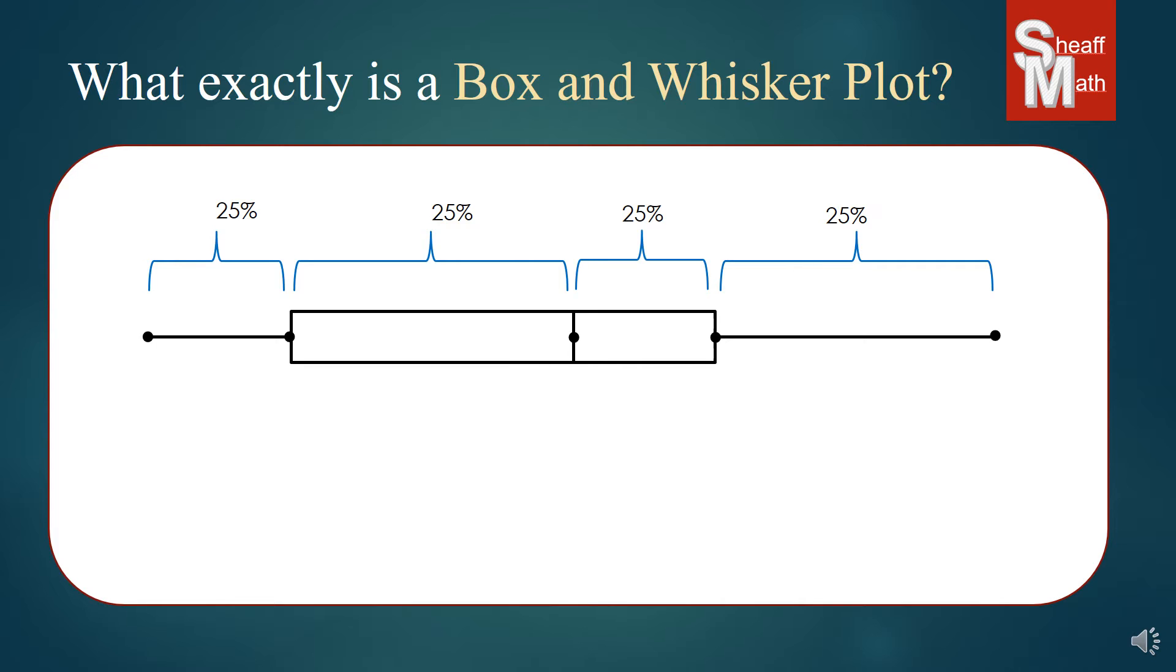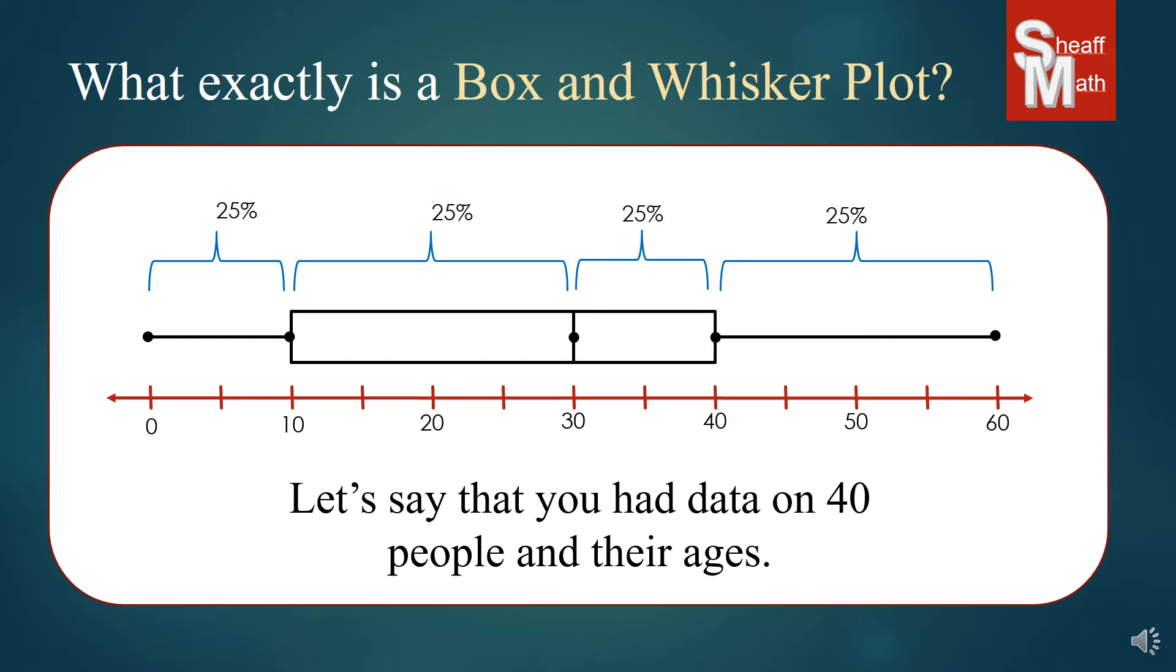Now we're going to give you a real life example. Let's say you had a family reunion and whoever was in charge wanted to find out the ages of everybody coming. They did a survey, asked everybody their age, and made this box and whisker plot. This represents 10 people out of 40, 25%, between 0 and 10.